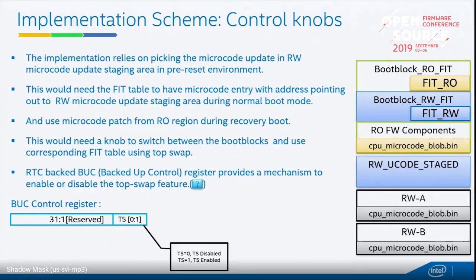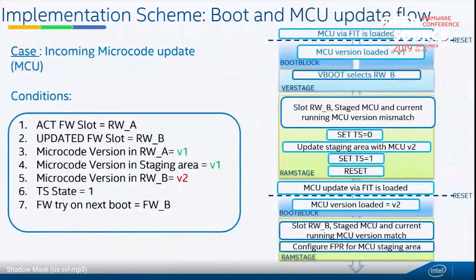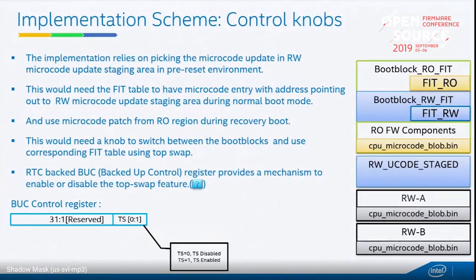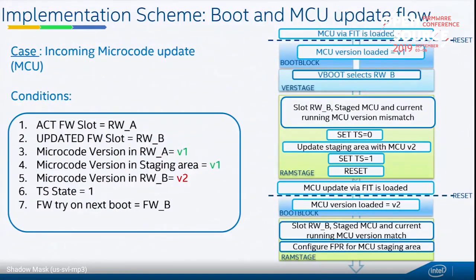This backup control is part of your RTC register block. You can write a one or zero to it as a switch to enable or disable the top swap. Now we'll look at the general flow of how the microcode update would work with the planned architecture.